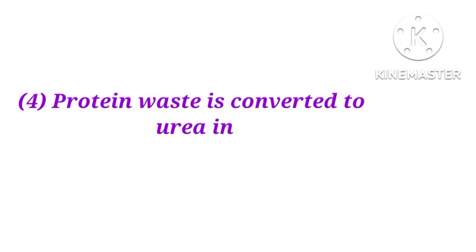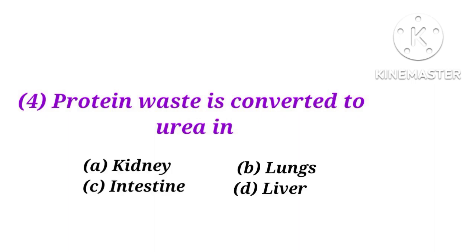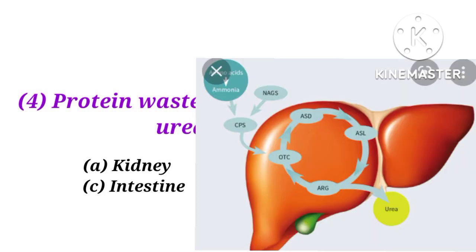Number 4. Protein waste is converted to urea in the kidney, lungs, intestine, or liver? The answer is D. Protein waste is converted to urea in the liver.